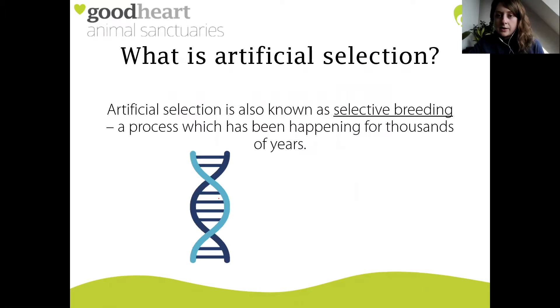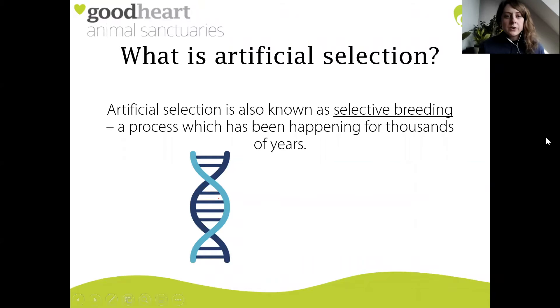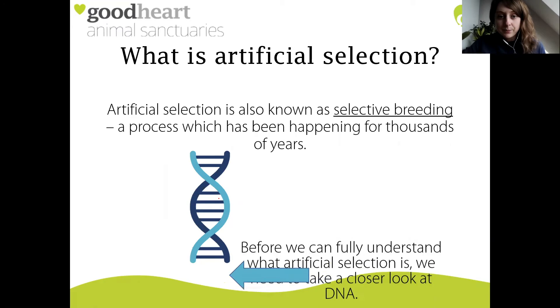Let's make a start. What is artificial selection? Well, artificial selection is also known as selective breeding. This is a process which has been happening for thousands of years.